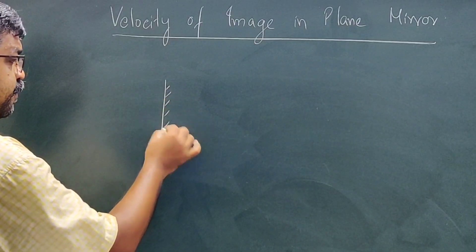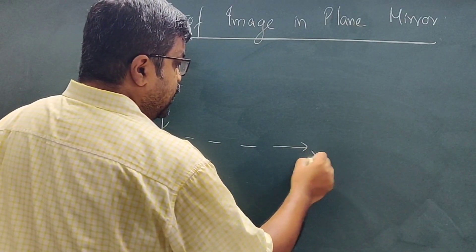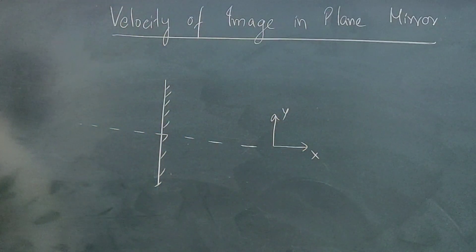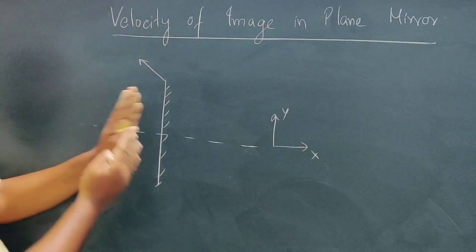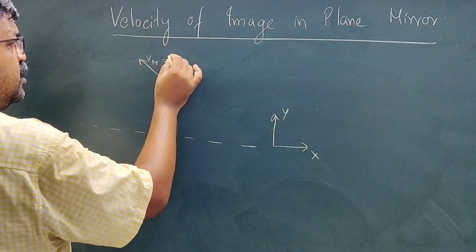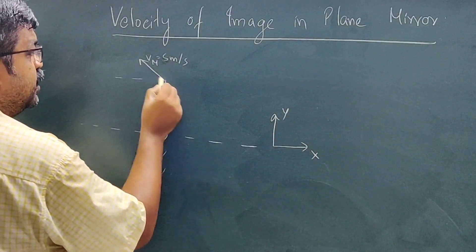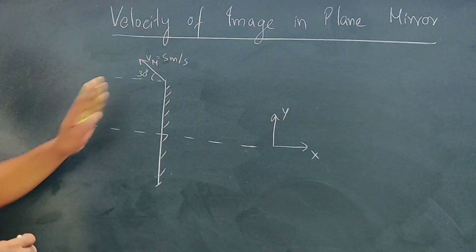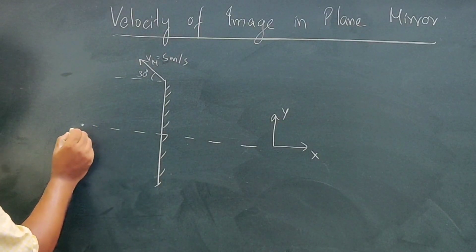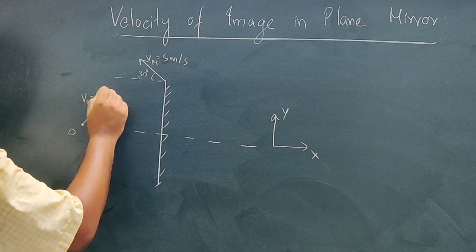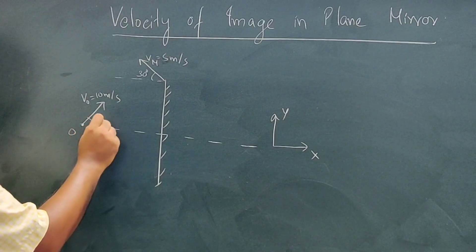Case 2: We have a plane mirror. The normal to the mirror is the x-axis, and the y-axis is vertical. The mirror is moving at 5 meters per second at 30 degrees to the horizontal, and the object is moving at velocity V0 equal to 10 meters per second also at 30 degrees to the horizontal.